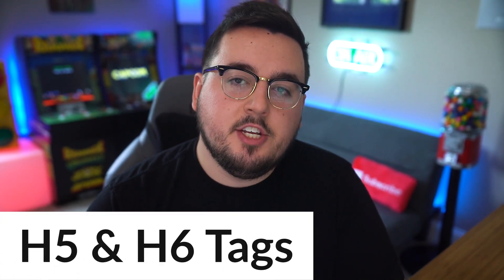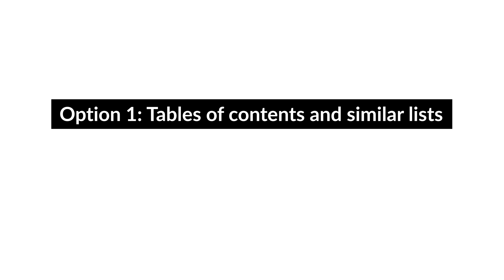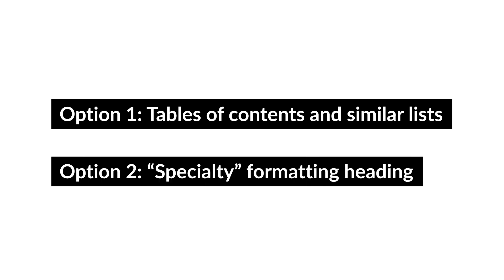A topic tends to be very in-depth if the ideas need to be broken down so that an H4 heading tag is needed. You can use H5 and H6 headings in a couple of different ways. The first way is often used in tables of contents and similar lists, though their main function is technically the same as the others. The second way is specialty formatting headings — applying special CSS to these two HTML heading tags that is completely different from H1 to H4, so you can use them to call attention to topics and ideas that might otherwise get overlooked.